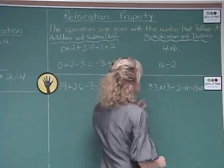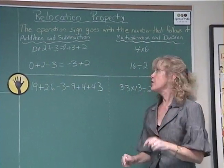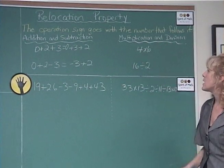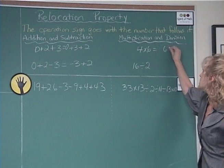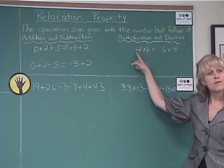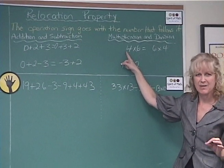Let's now go over here to multiplication and division. And I'll show you that relocation property works for both of these. So first of all, 4 times 6, you know that equals 6 times 4. But where's the operation sign with the 4? Again, we come back to the identity element.